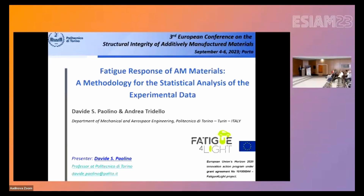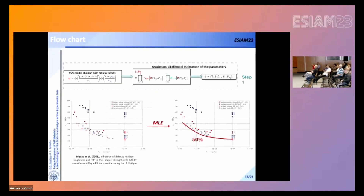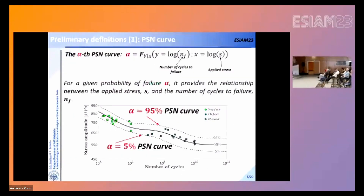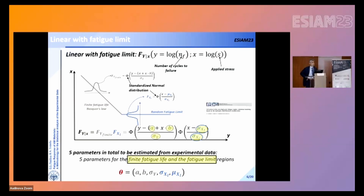Thank you for an interesting approach. My question is about when you define the statistical parameters — you use a constant standard deviation. This is an average deviation from all data. Deviations of experimental fatigue data are not regularly distributed across the whole lifetime: in the low cycle fatigue, deviation is relatively small, and in the high cycle fatigue, relatively large. Is it possible to take this into account, for example by estimating level by level of stress amplitude, rather than over the whole lifetime region?